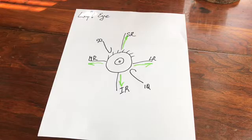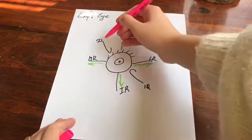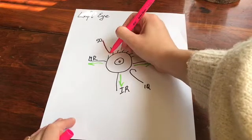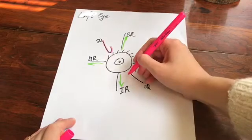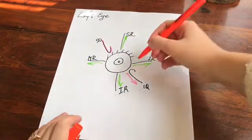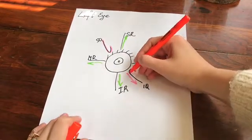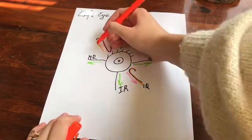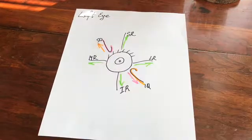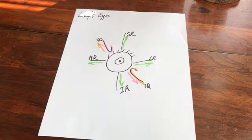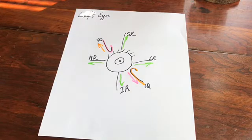Superior oblique muscle moves the eye downward and to the lateral, and inferior oblique muscle moves the eye upward and to the medial. Now let's talk about innervation of these muscles. The muscles are innervated by three different nerves: third, fourth, and sixth.